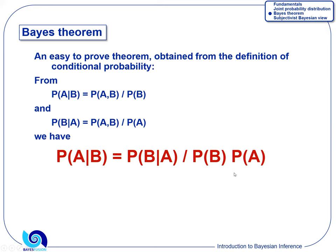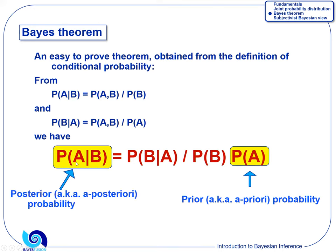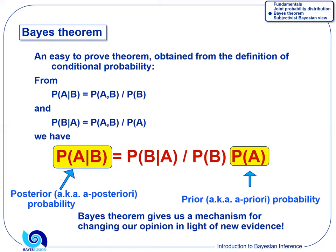So now we have Bayes' theorem. It's not just a theorem — it's the interpretation that matters. On the right-hand side of the equation is probability of A, which Bayes called the prior probability — the a priori probability. On the left-hand side is the posterior probability, also called a posteriori from Latin. These are numbers expressing the strength of evidence. The theorem gives us the mechanism for changing our opinion in light of new evidence.